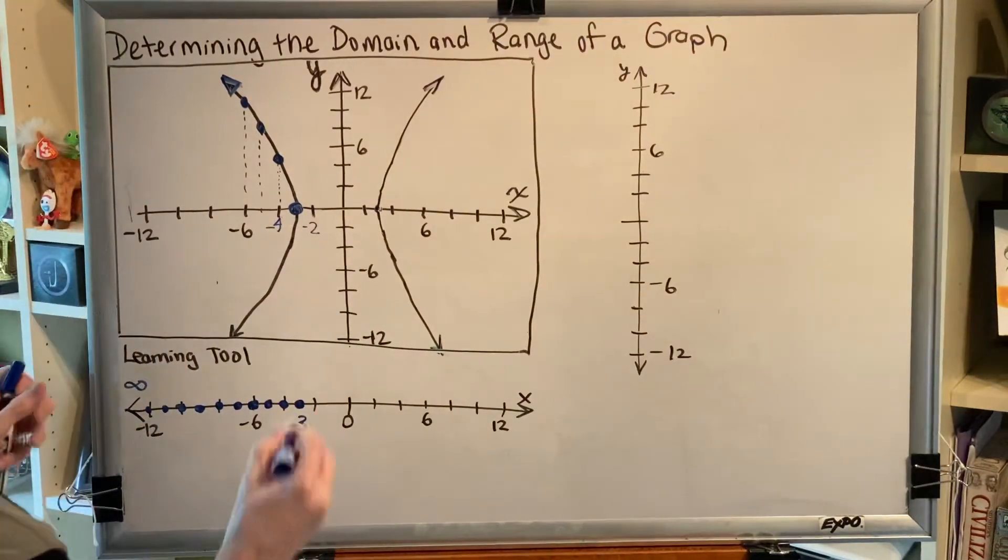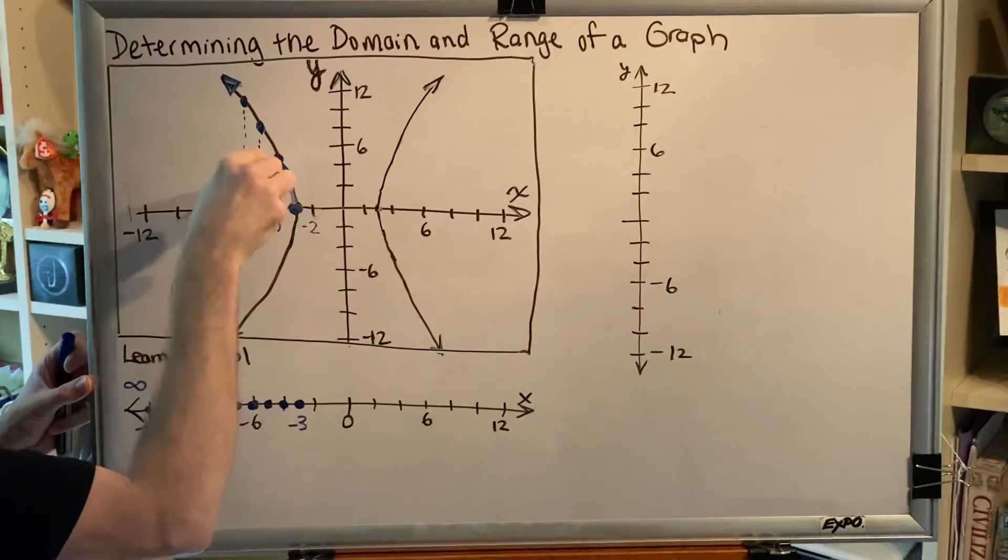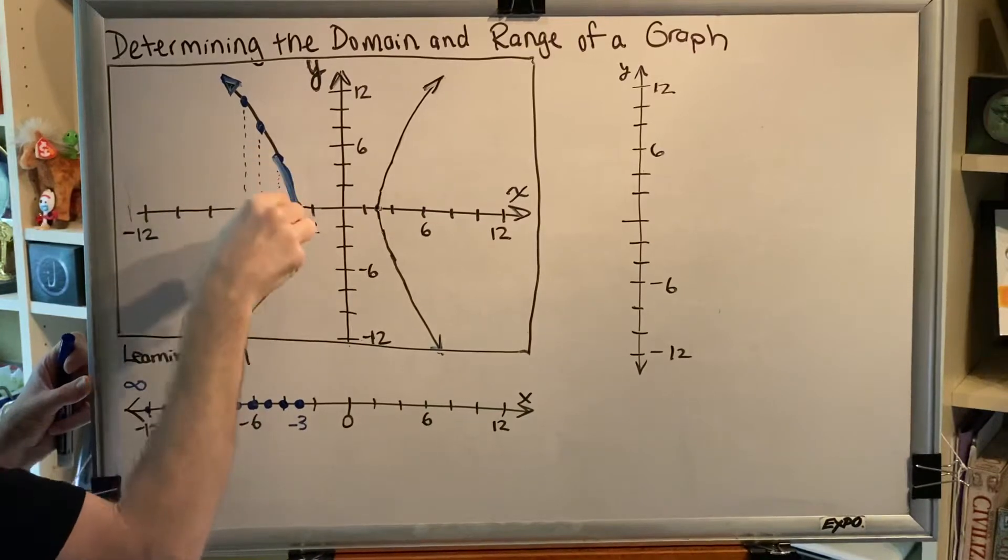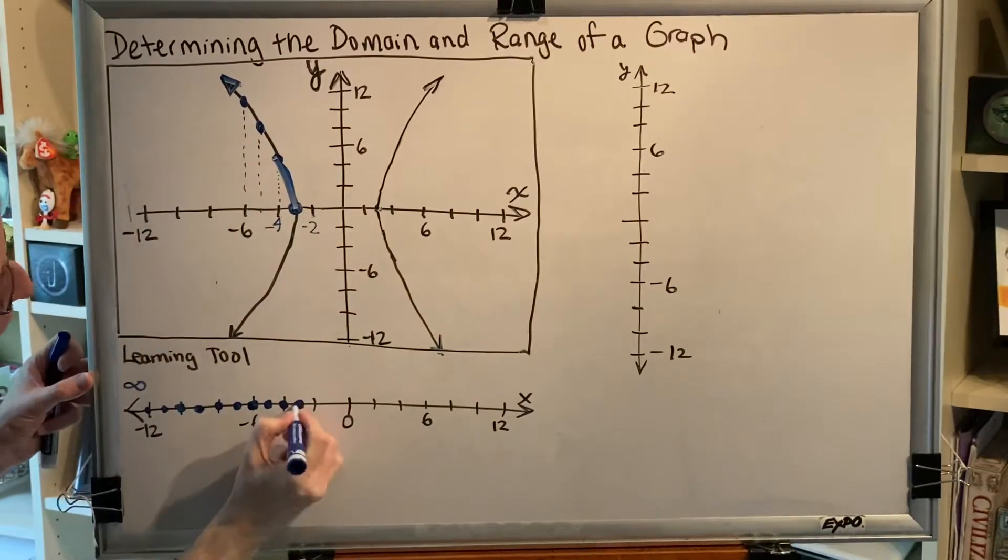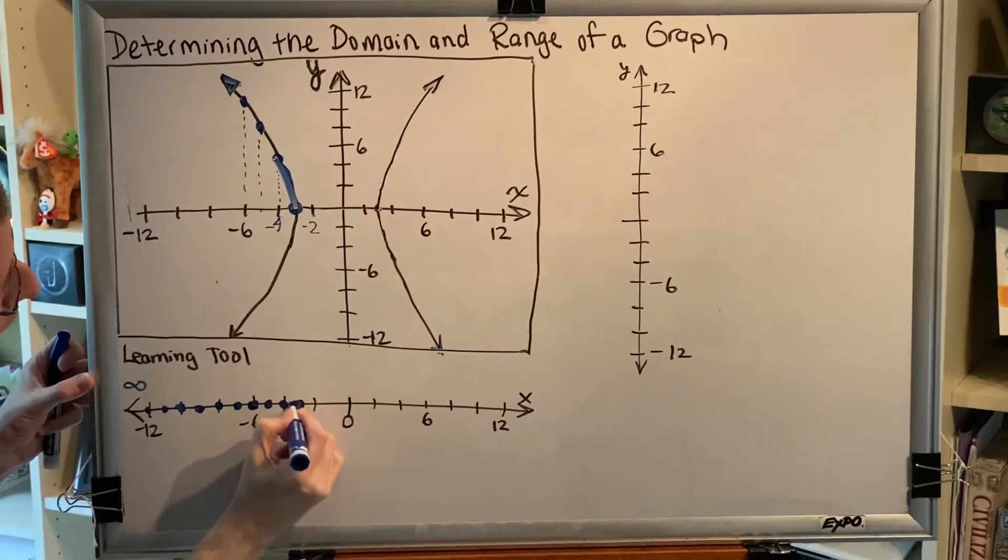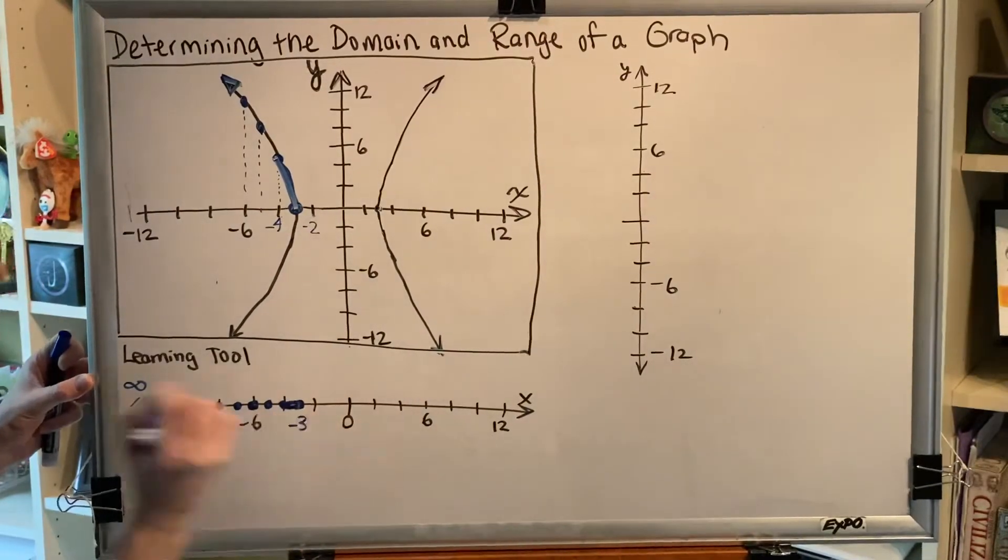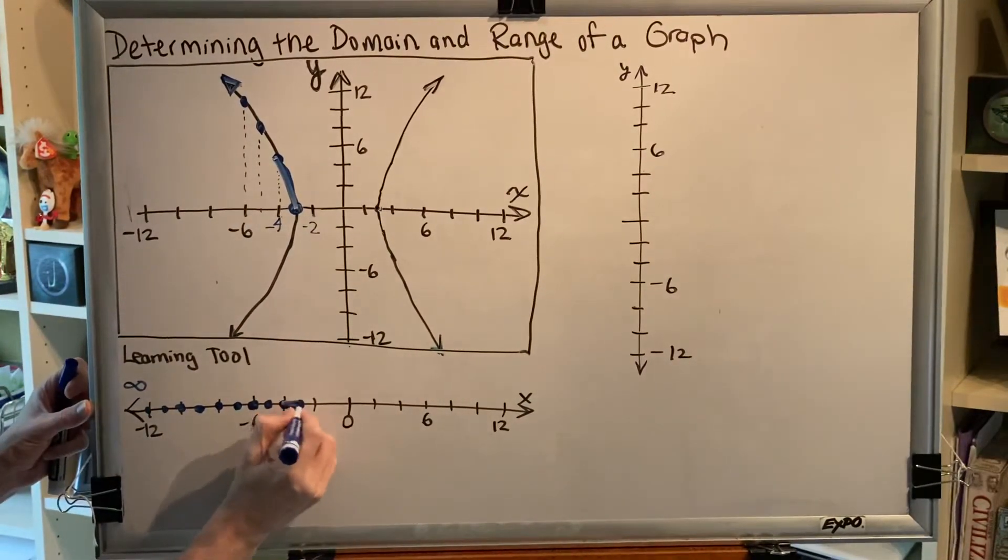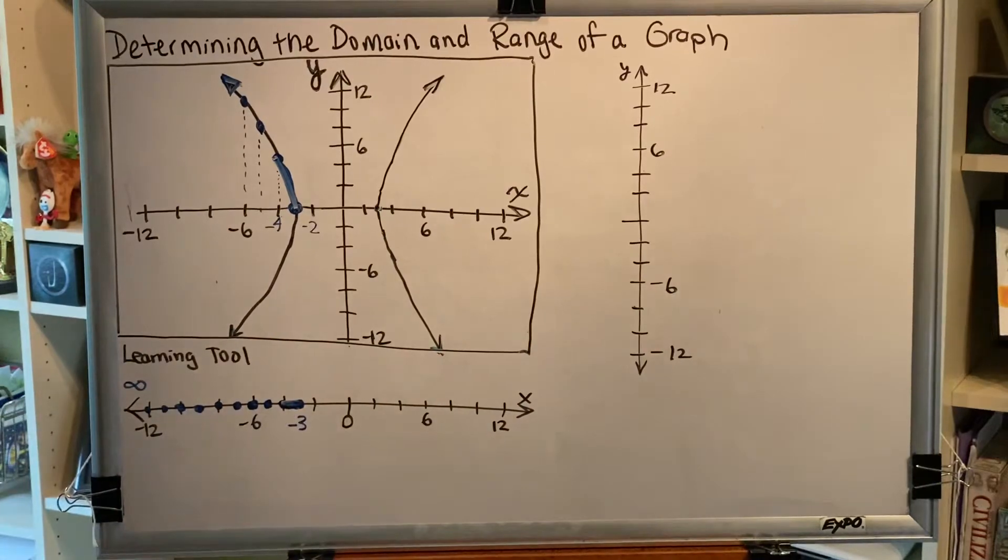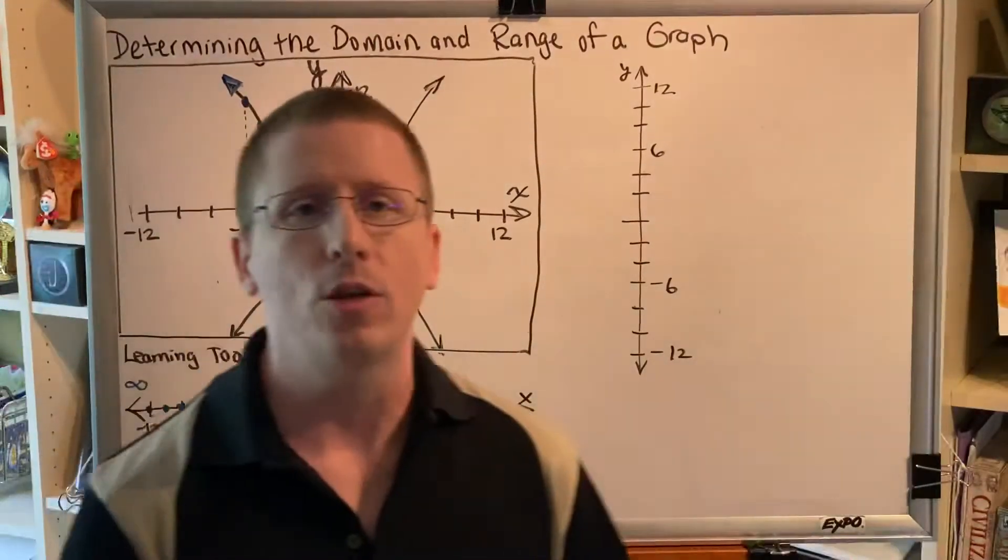The point I'm making is there are an infinite number of points between negative 3 and negative 4. And so when we draw all of those infinite number of points, it forms a shaded region. We no longer have just a single value at negative 3 and a single value at negative 4. We have all of the values in between.